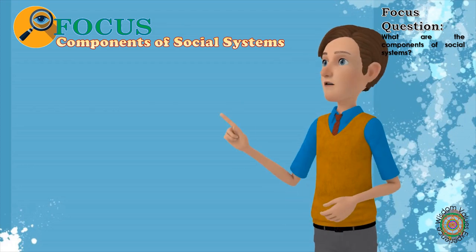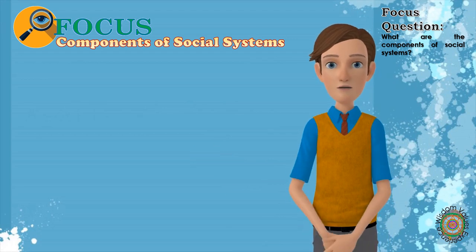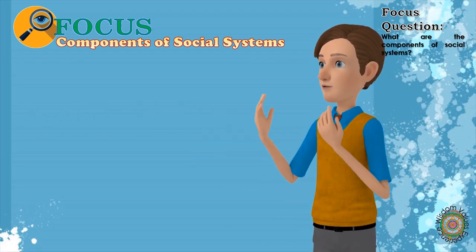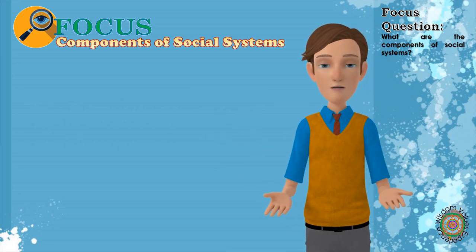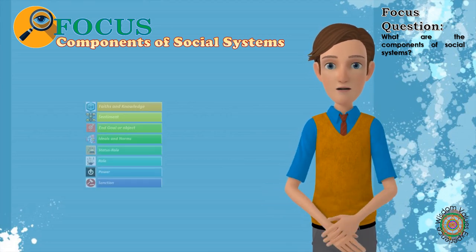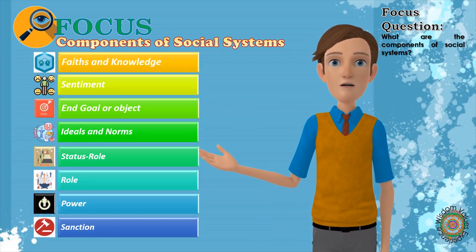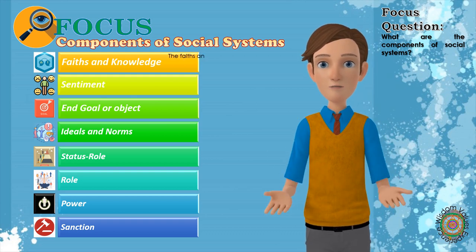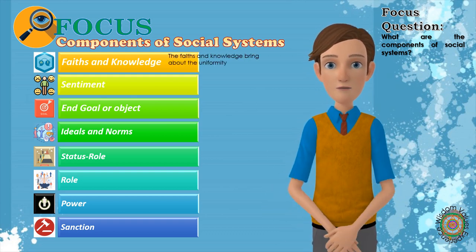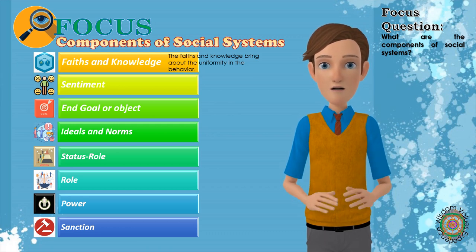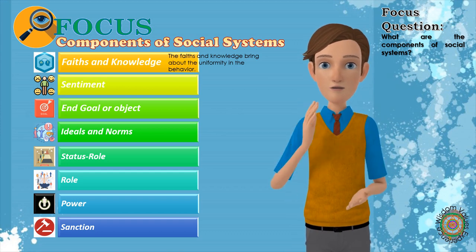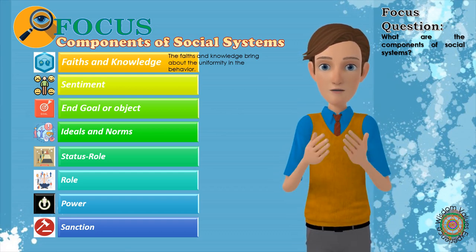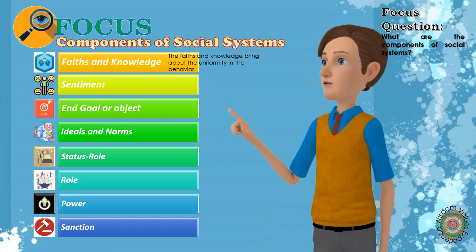To further our discussion, let us talk about the elements of social systems. A social system is the collection of individuals and institutions that work together to form a functioning society. Each social system is made up of the same basic components. 1. Faiths and Knowledge: Faiths and knowledge bring about uniformity in behavior. They act as controlling agencies of different types of human societies. Faith is the result of the prevalent customs and beliefs, and they enjoy the force of guiding individuals towards a particular direction.